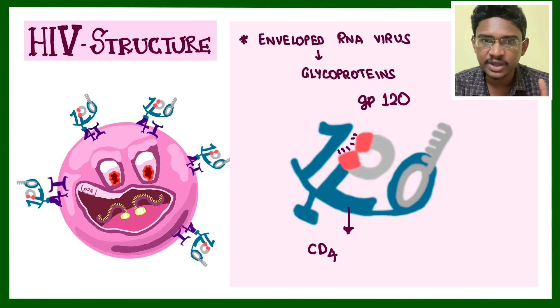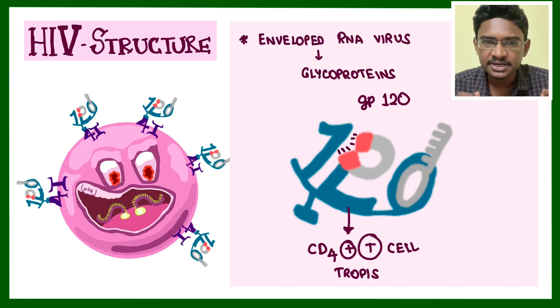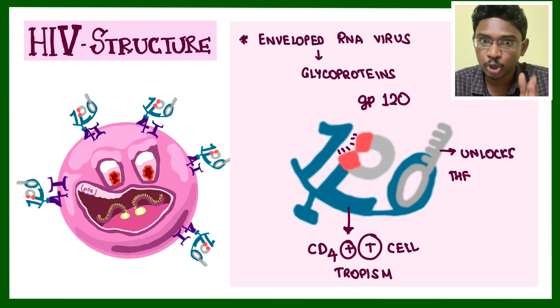The most important glycoproteins are numbered 120 and 41. This gp120 has magnets, meaning they get attracted to the CD4 receptor present on the CD4 positive T cells.